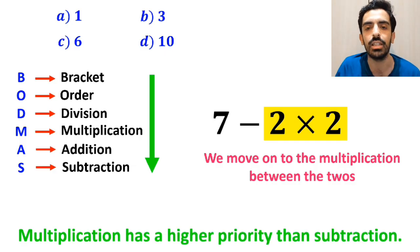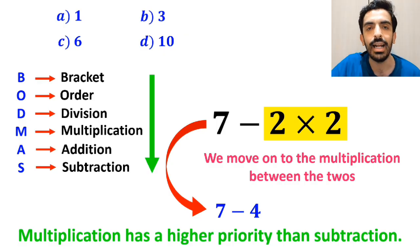And the final step, we move on to the multiplication between the 2s, because multiplication has a higher priority than subtraction. So we write this expression as 7 minus 4, and finally we get the answer 3.